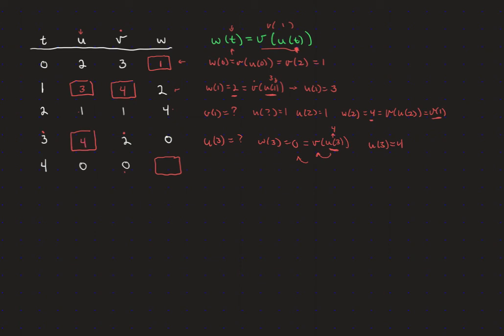The last one is more straightforward now that everything else is filled in. w(4) = v(u(4)), and u(4) = 0, and v(0) = 3. So we get the final piece of our table. These problems are tough — you have to get really creative and think them through, because there just aren't very many of these kinds of examples.